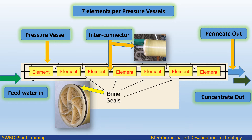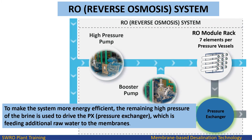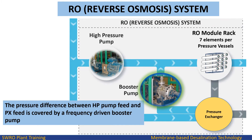Feed water is passed to the pressure vessel, which contains seven RO elements, each element connected by an interconnector. To make the system more energy efficient, the remaining high pressure of the brine is used to drive the PX — pressure exchanger — which feeds additional raw water to the membranes. The pressure difference between the HP pump feed and the PX feed is covered by a frequency-driven booster pump.